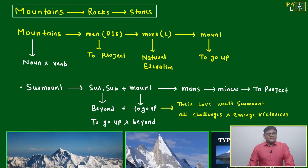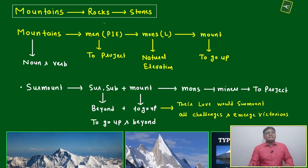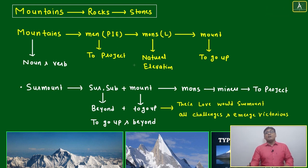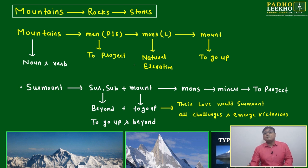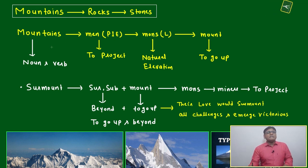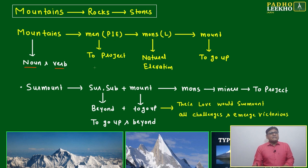We'll start with the first chain or first logical thinking, that is mountains, rocks and stones — because this is the big thing we are seeing on this earth. The first thing any new person will see on earth will be big mountains: Himalayas, Alps — big, big mountains. Mountains, rocks and stones.